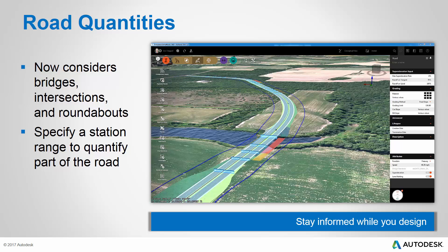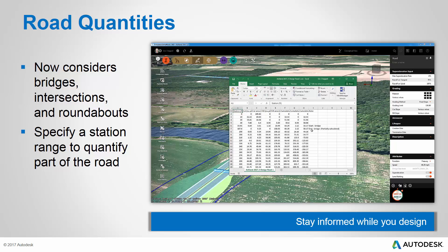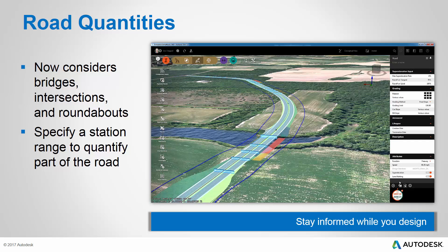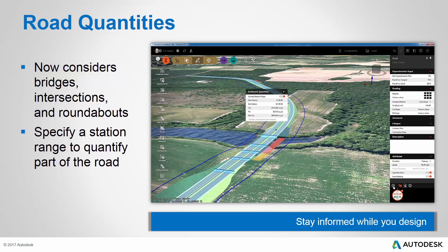Within InfraWorks 360, calculating road quantities is now more powerful and flexible than ever. The software now considers bridges, intersections, and roundabouts when calculating quantities. When I access EarthWorks settings, I now have the option of including intersection, roundabout, and bridge information in the quantities report. And if I run a detailed report, you'll see information pertaining to bridges, roundabouts, and intersections. Additionally, I can now ask the software to limit the report to a certain station range — here I'll calculate quantities from 0 to 10+00, and the values will only reflect what's between those two stations.